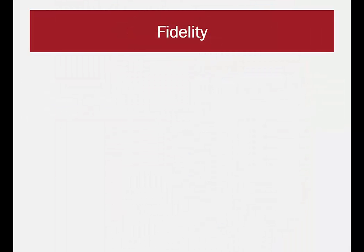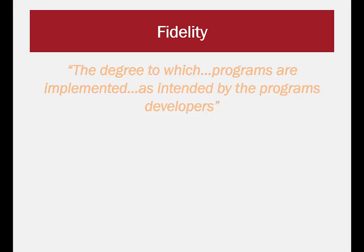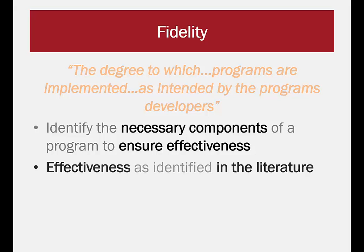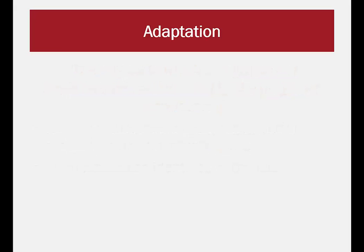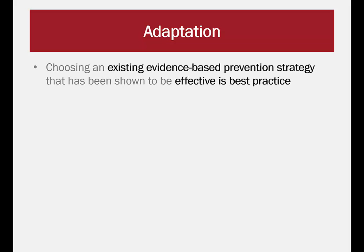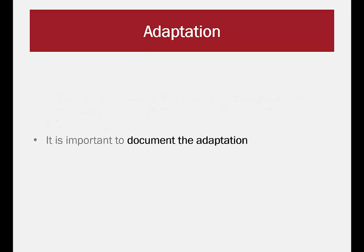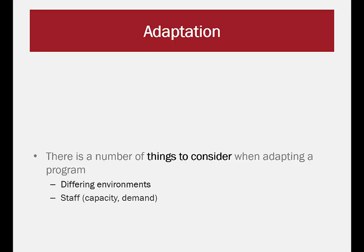Earlier in the module, fidelity was highlighted as a key component of implementation. Fidelity is essentially the degree to which a program is implemented as intended by program developers. It identifies the necessary components of a program to ensure effectiveness, as identified in the literature. Another key component is adaptation. From an earlier stage in the public health approach, we learned that best practice is to choose an existing evidence-based prevention strategy. Often, the strategy identified would have been implemented in a population other than the population you have, and therefore it will need to be adapted. It is very important to document all the steps taken to adapt a program, such as the environment, staff, capacity and demands, resources available, equipment, materials, administrative process, and the setting and risk profile of the population.